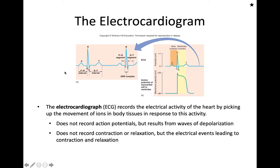The electrical events of the heart will always precede the force of contraction. It's important to understand that there's a big difference between the ECG, which is the sum of all electrical activity, and an action potential recorded in a single cell. The action potential triggers the ventricle contraction, recorded from a single cell, whereas the ECG is recorded from the surface of the body based on placements of electrodes and is the sum of all electrical activity.